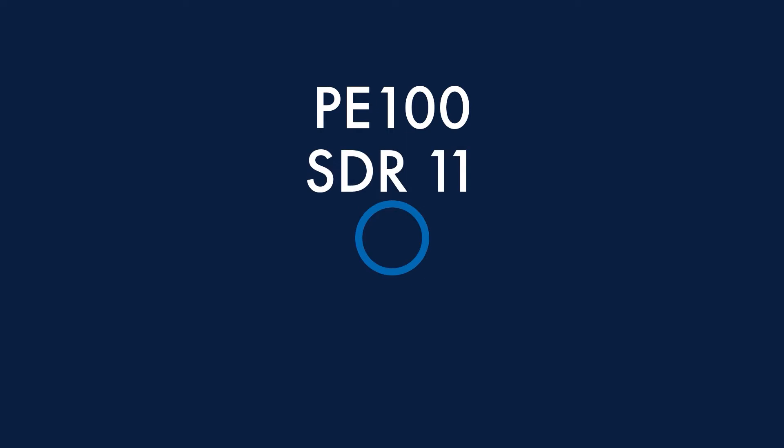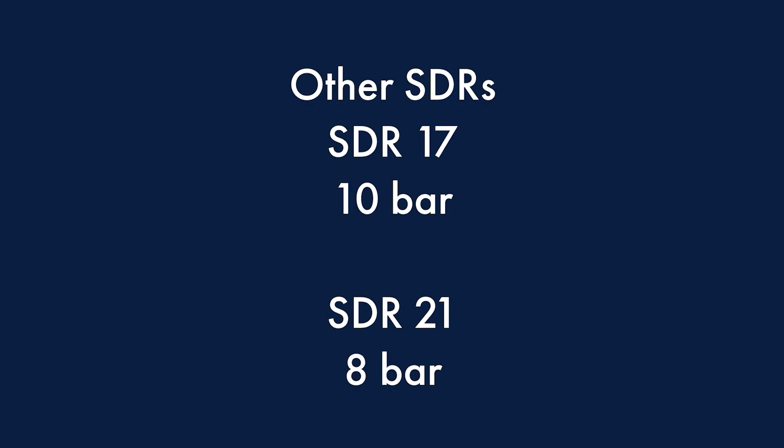For PE100 material, as this is a stronger material, the SDR 11 pipes all have a pressure rating of 16 bar. There are also other SDRs, such as SDR 17 where pipes would be 10 bar, and SDR 21 where pipes would be 8 bar, and so on.